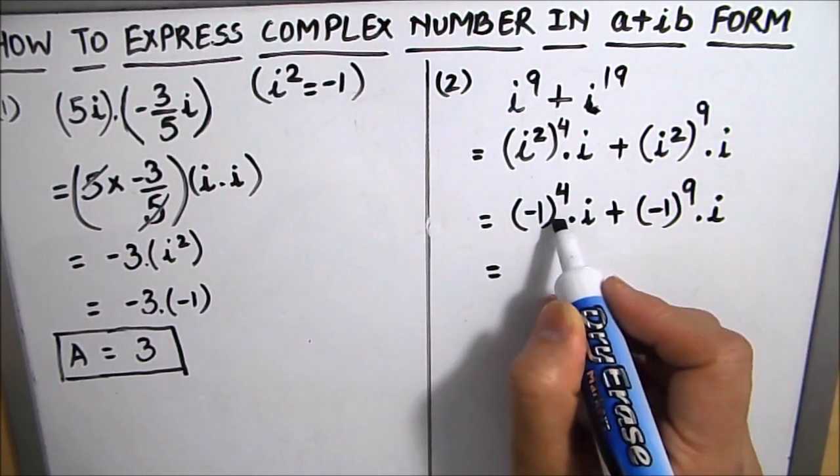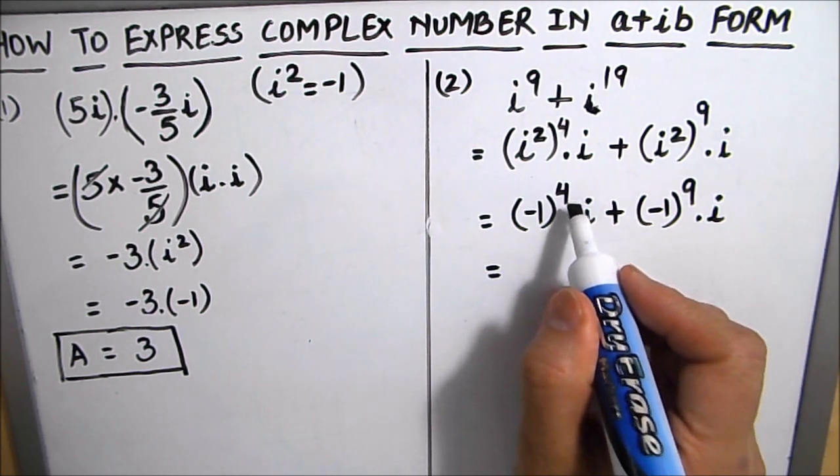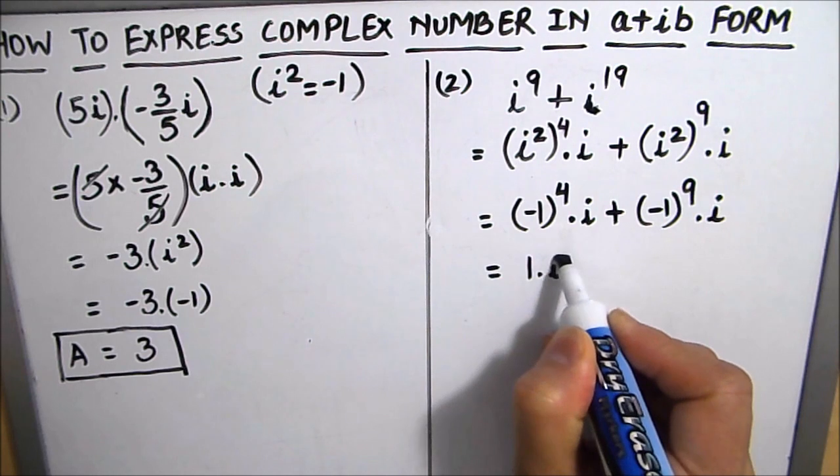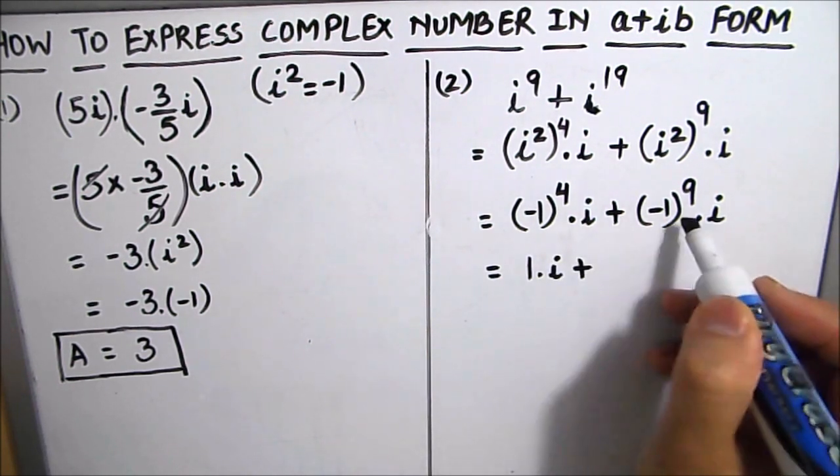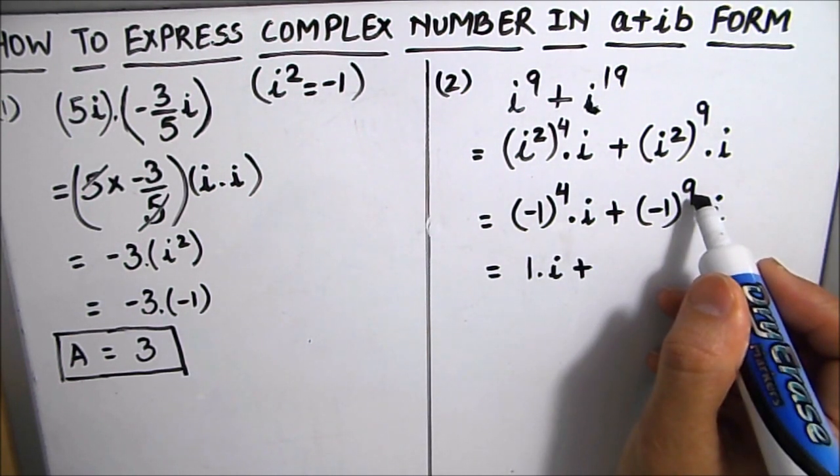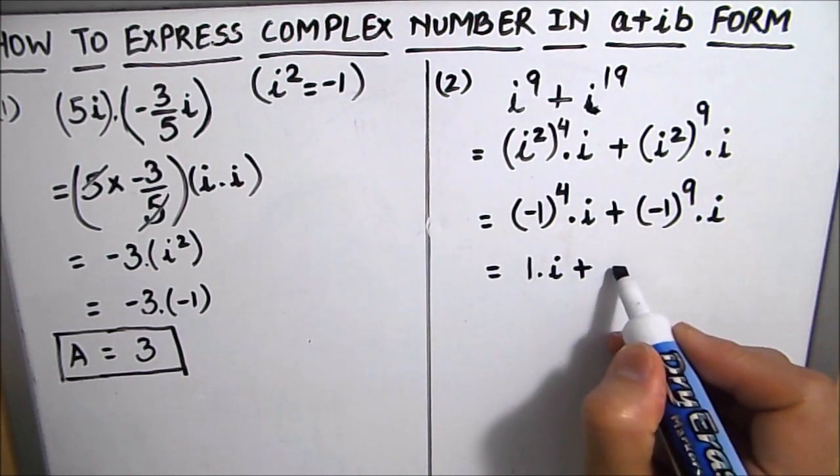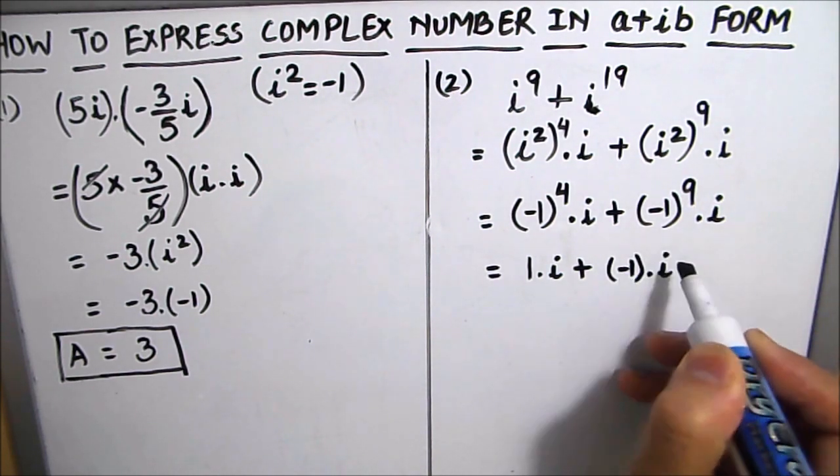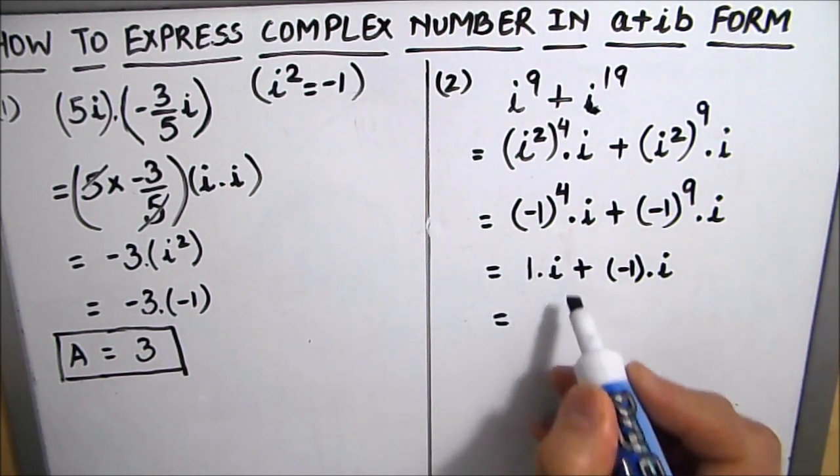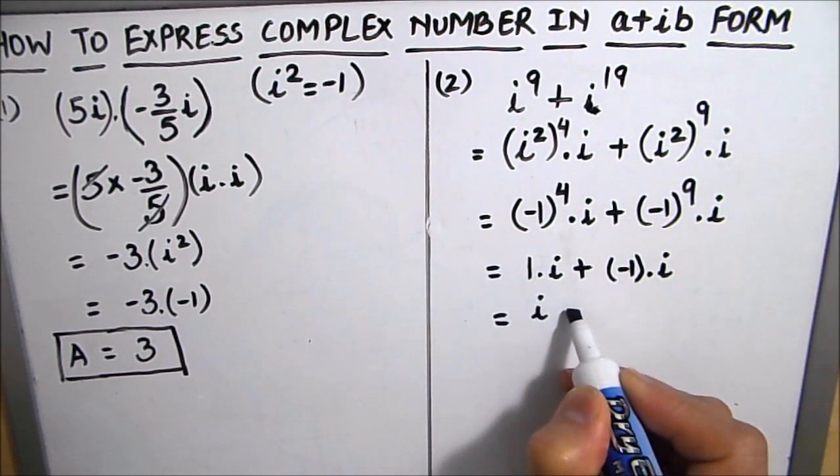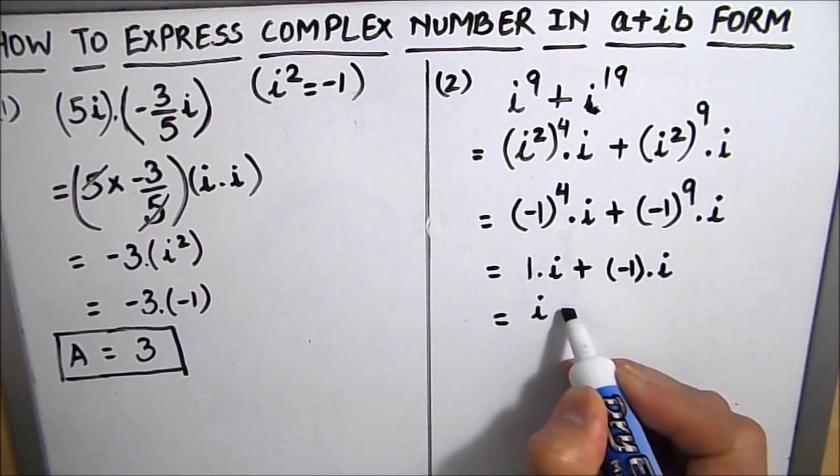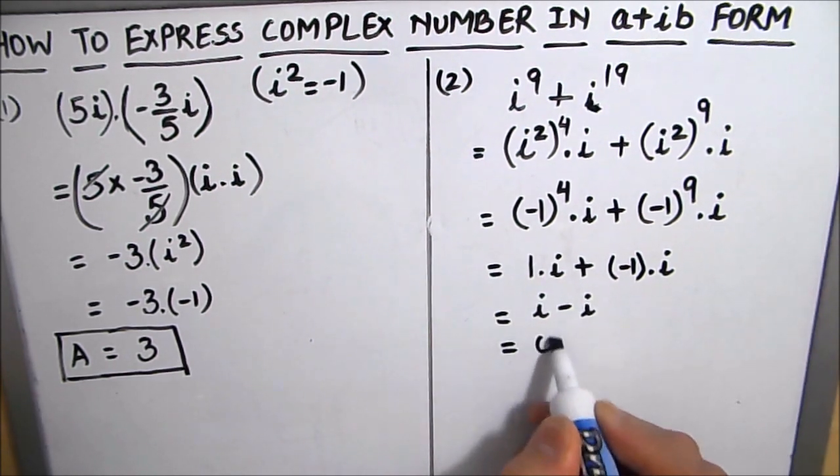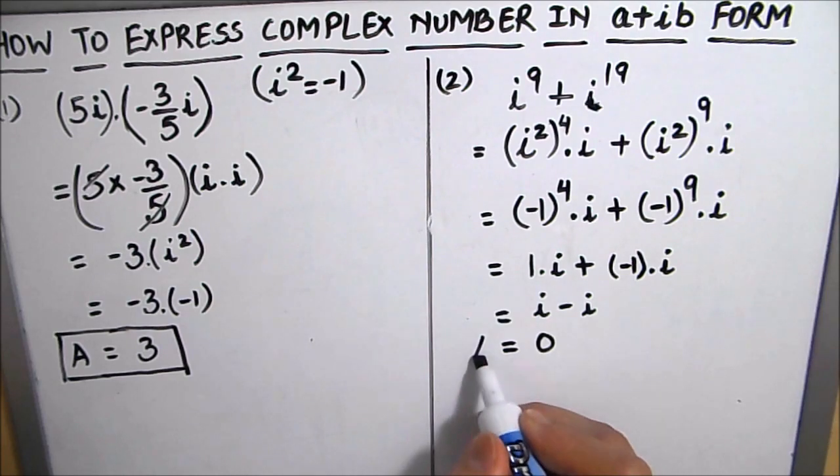So minus 1 to the power 4, which is an even number, so we are going to get here minus 1 times iota. So this will become iota and this both will become minus iota. So our answer will become 0. So this is our final answer.